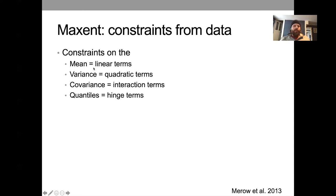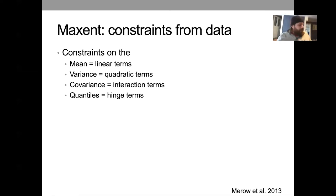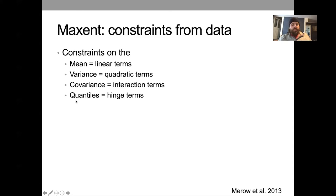Constraining the mean of a predictor at presence locations corresponds to a linear term in a regression model. Constraining the variance corresponds to a quadratic term (as long as the mean is also included). Covariance corresponds to interaction terms, and quantiles correspond to hinge terms — the features in MaxEnt that allow very flexible models.